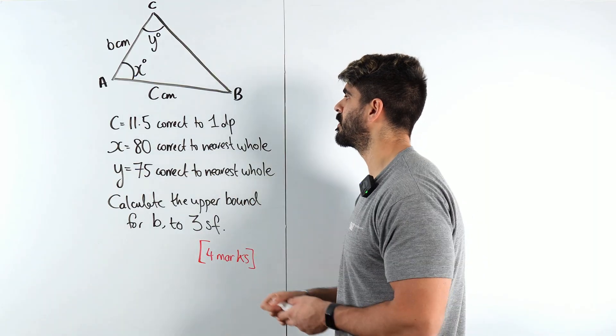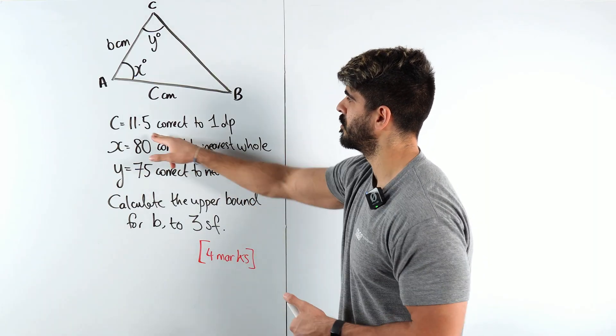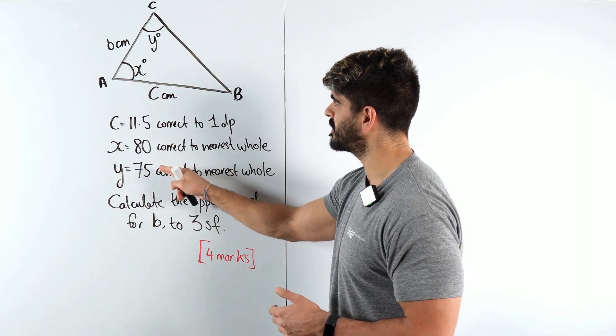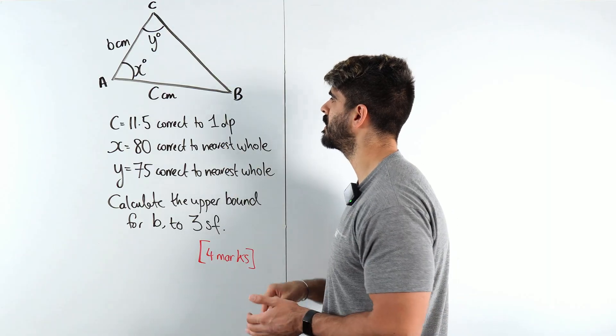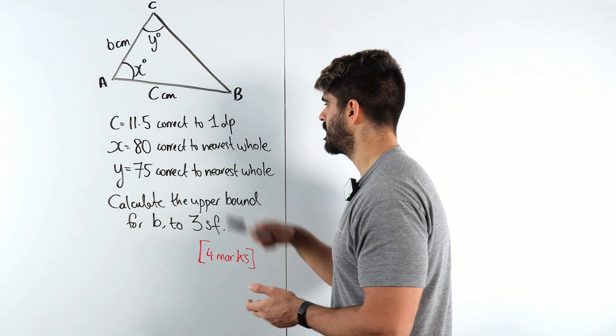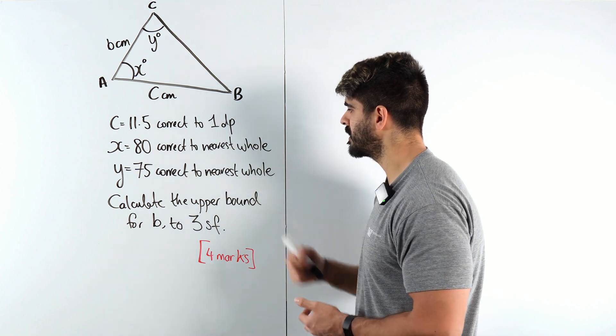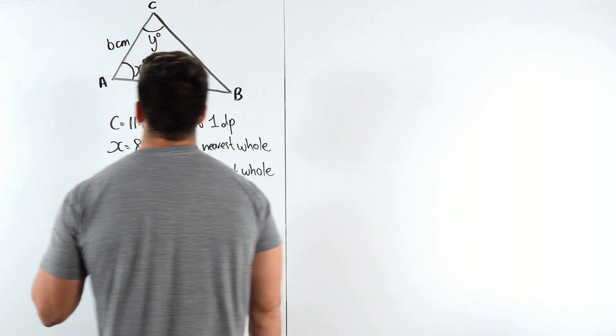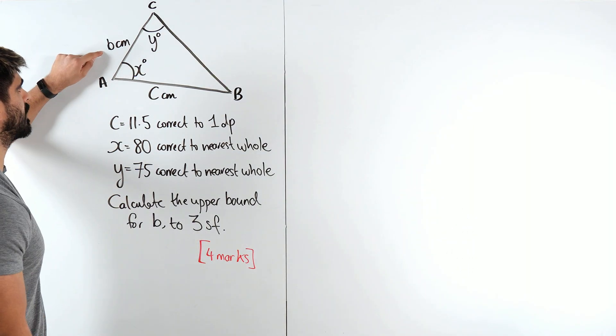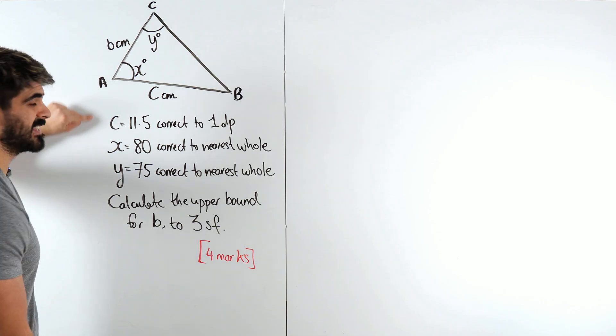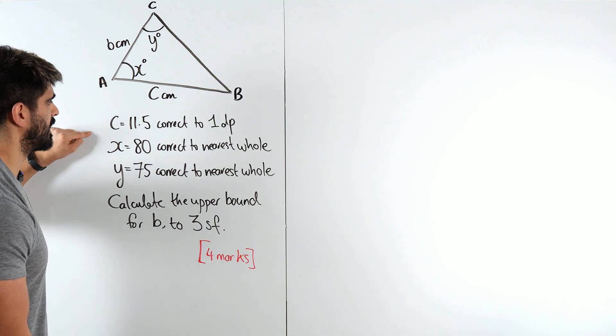It says c is 11.5 correct to 1 decimal place. They don't need to put centimeters here because that's indicated on the diagram. x is 80 correct to the nearest whole number, and they don't need to say degrees because the degree is on the x. Then we have y is 75. Calculate the upper bound for b.